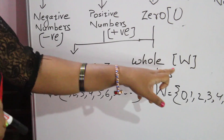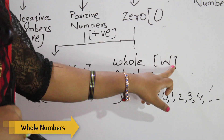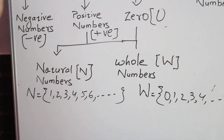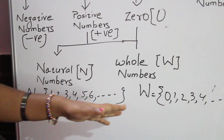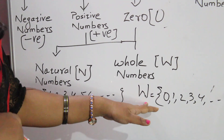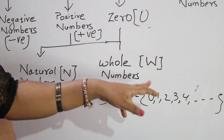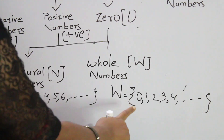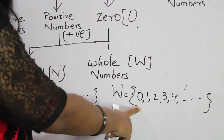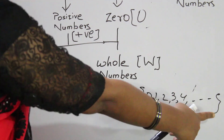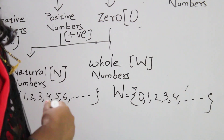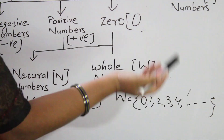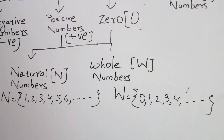Next we come to whole numbers. The whole number set is denoted by capital W. The counting numbers starting from 0 are called whole numbers: 0, 1, 2, 3, 4, 5. The smallest whole number is 0. The largest whole number cannot be determined, and there are infinite whole numbers.